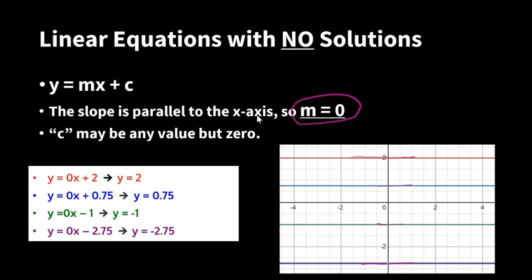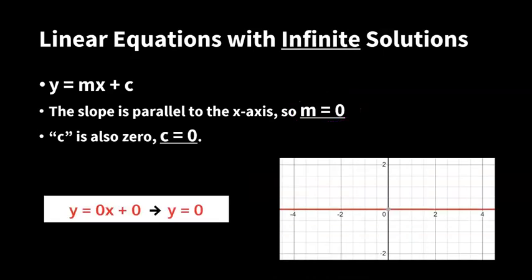What happens if m equals 0 and c equals 0? The entire function lies on the x-axis. That means every single point on the graph is a solution. Since there are an infinite number of points on any line, there are infinite solutions. This applies only to the equation where m equals 0 and c equals 0 — or generally, y equals 0. We've now covered the key cases, and you should have a better idea of how to solve a linear equation.